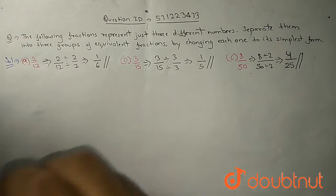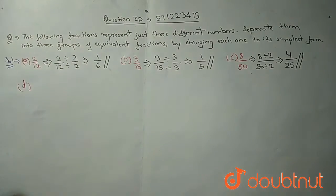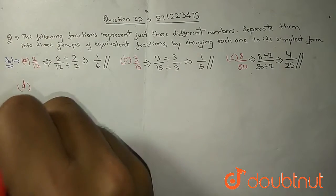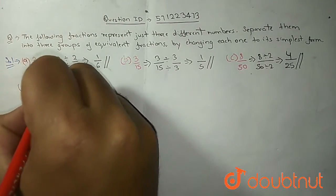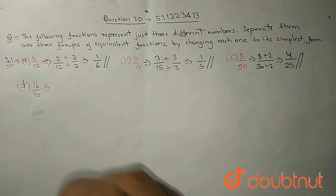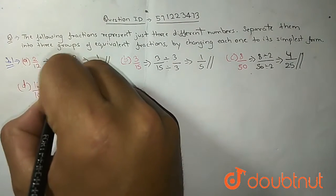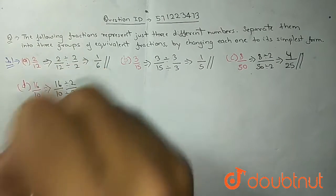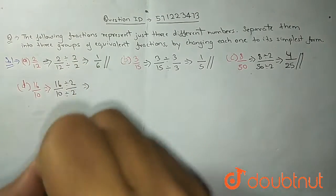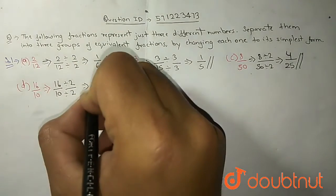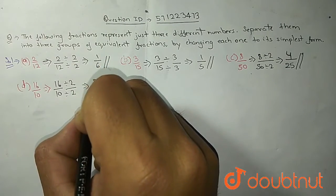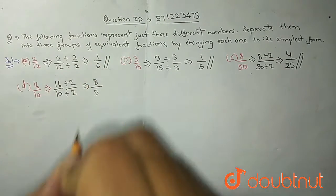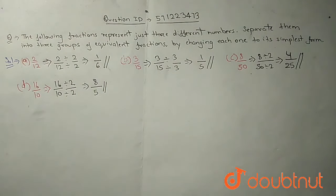Next part, D part is 16 upon 10. Let's divide 16 upon 10. The lowest will be 2. So we will divide by 2 on numerator as well as denominator. After dividing 16 it will become 8 and dividing 10 by 2 it will be 5. It can't be divided further because in no table do 8 and 5 come together.